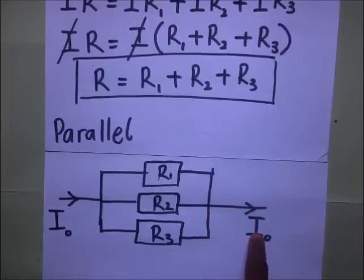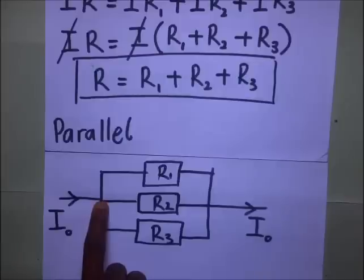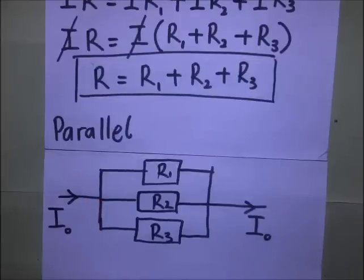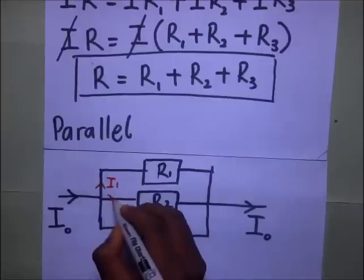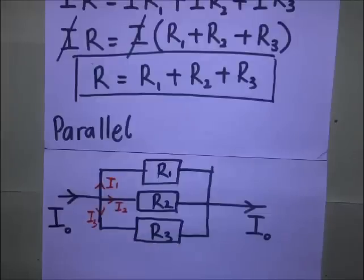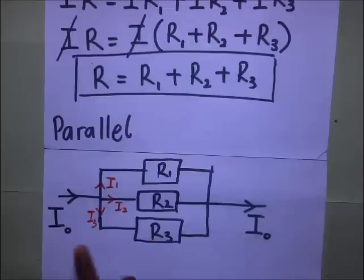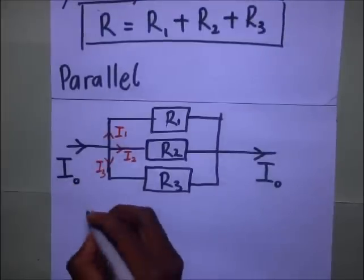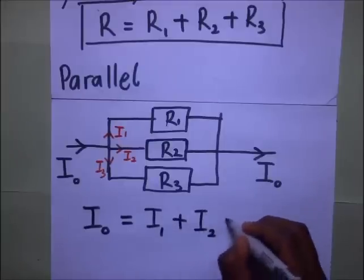The current going through resistor one cannot be the same as the total incoming current, because when it reaches that junction it splits up. Some current goes up as I1, some goes through as I2, and some goes down as I3. When these currents meet again at the junction, I1, I2, and I3 recombine to form the original current that came in. So I-naught is equal to I1 plus I2 plus I3.